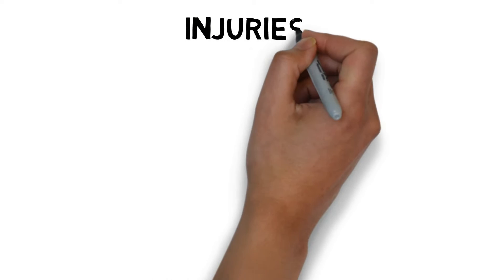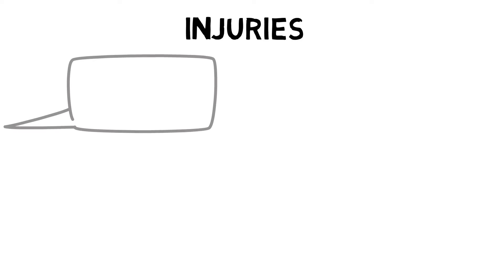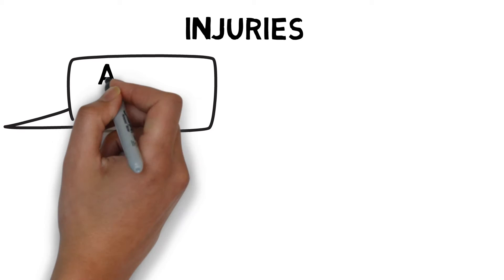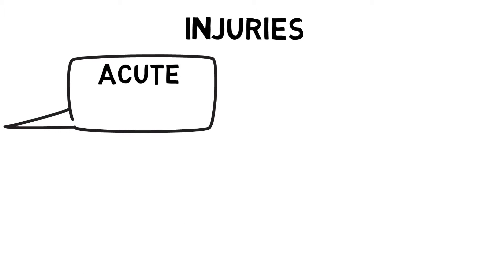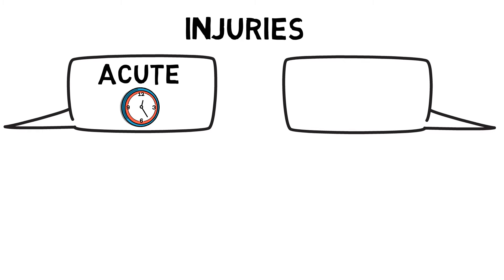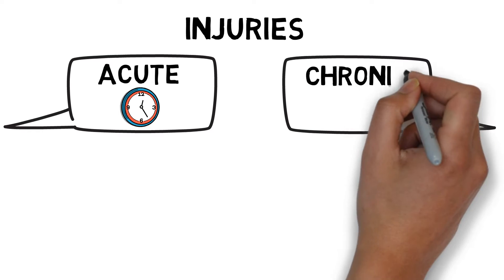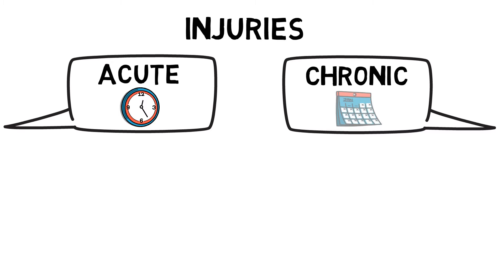An injury is any kind of pain or physical damage that occurs as a result of sport, exercise or physical activity. Acute injuries refer to injuries that have happened in the moment, such as falling over and spraining an ankle, and usually relate to anything up to 72 hours after the incident. Chronic injuries are issues that develop slowly and last a long time — they can also be referred to as overuse injuries, such as tennis elbow or shin splints.